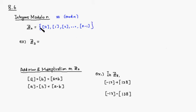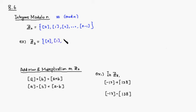For example, if you have Z mod 3, Z mod 3 is going to have three elements: equivalence class represented by 0, equivalence class represented by 1, and equivalence class represented by 2.